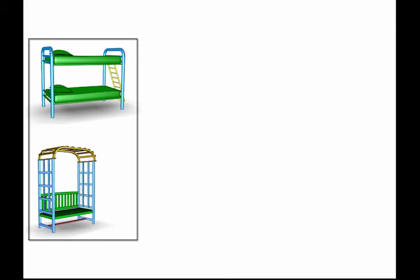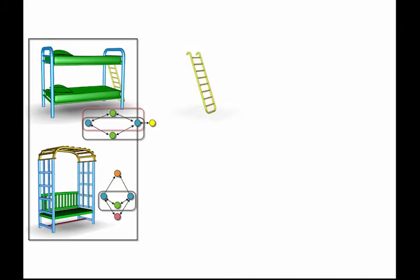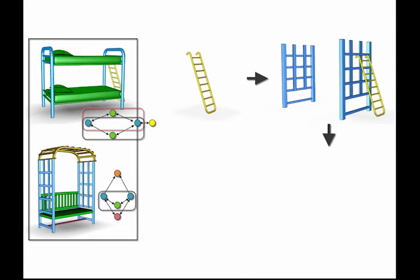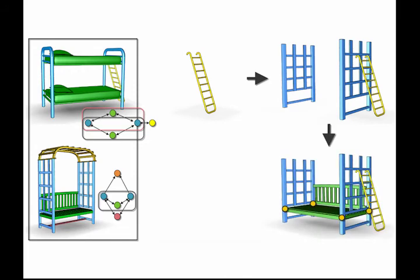We progressively replace the S-FARs to generate a new model. Such replacements are based on spatial relation graphs that help preserve structures. Each time a new node is replaced, we optimize its position and scale according to the existing context.